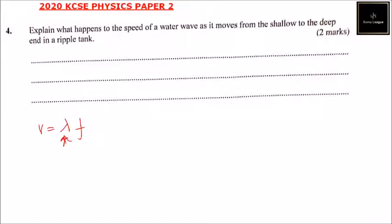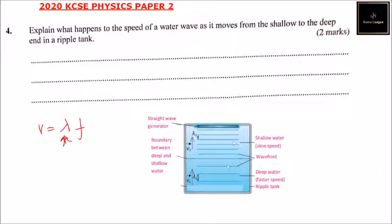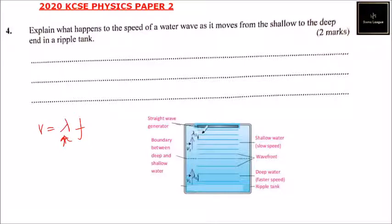We can have a picture of that. From the shallow — this is the shallow water — the speed is low. As the wave spreads to the deep, you can see here the wavelength; that is the wavelength, and this is the wavelength. This one is bigger, so the velocity increases. This is the boundary between the deep and the shallow.